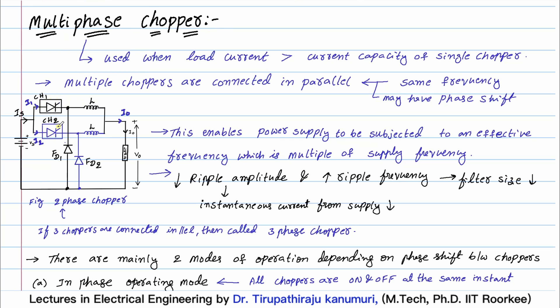If two choppers are connected in parallel, it is called a two-phase chopper. In this image, CH1 and CH2 are the two chopper circuits connected in parallel, each representing a complete setup — including the main thyristor and commutation circuit, whether voltage commutation, current commutation, or load commutation, depending on the application. If three are connected in parallel, that is called a three-phase chopper.